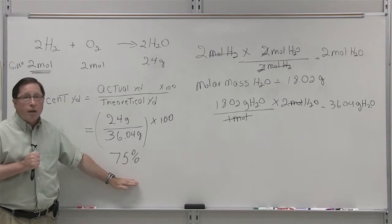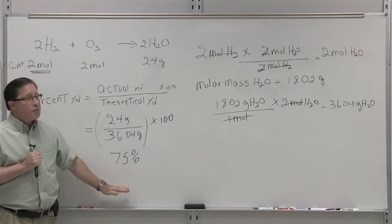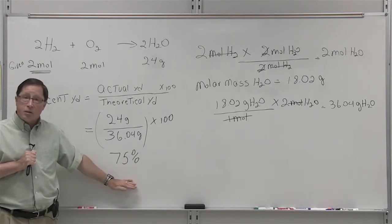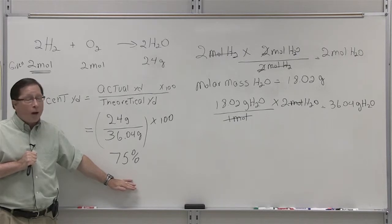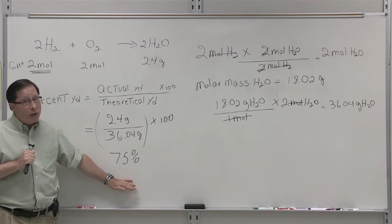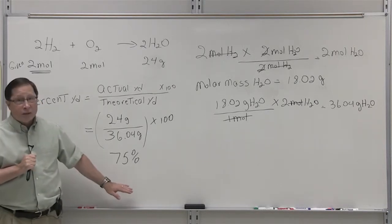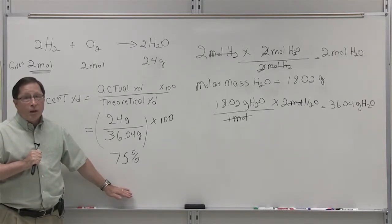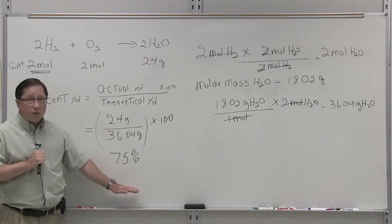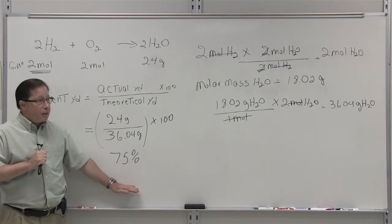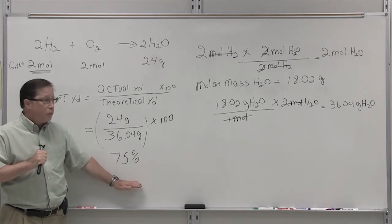Now, in some processes, 75% would be considered a good yield, while in other processes, it would be considered a bad yield. It depends on the complexity of the process and other factors as to whether that would be the case.